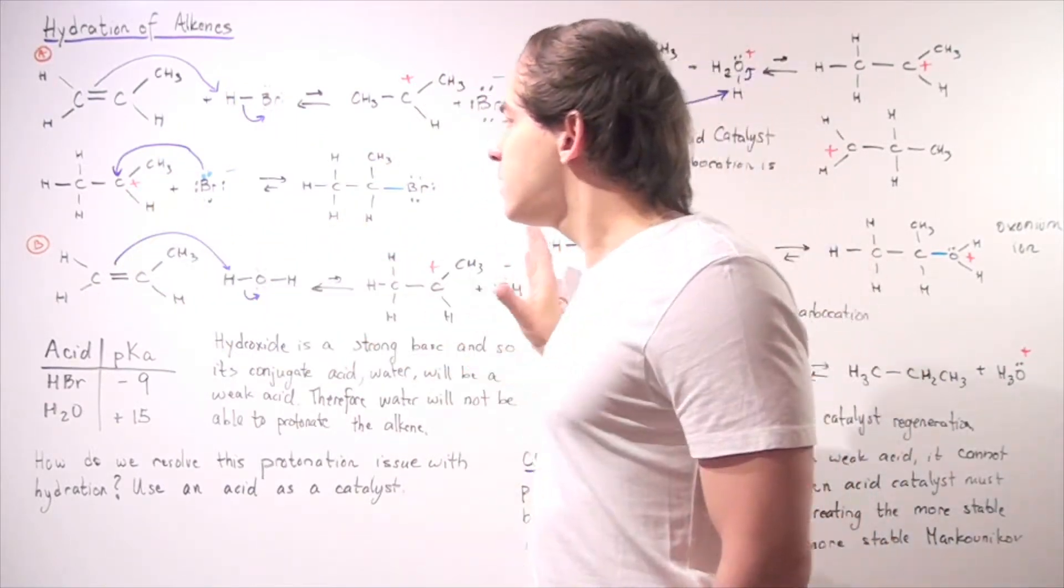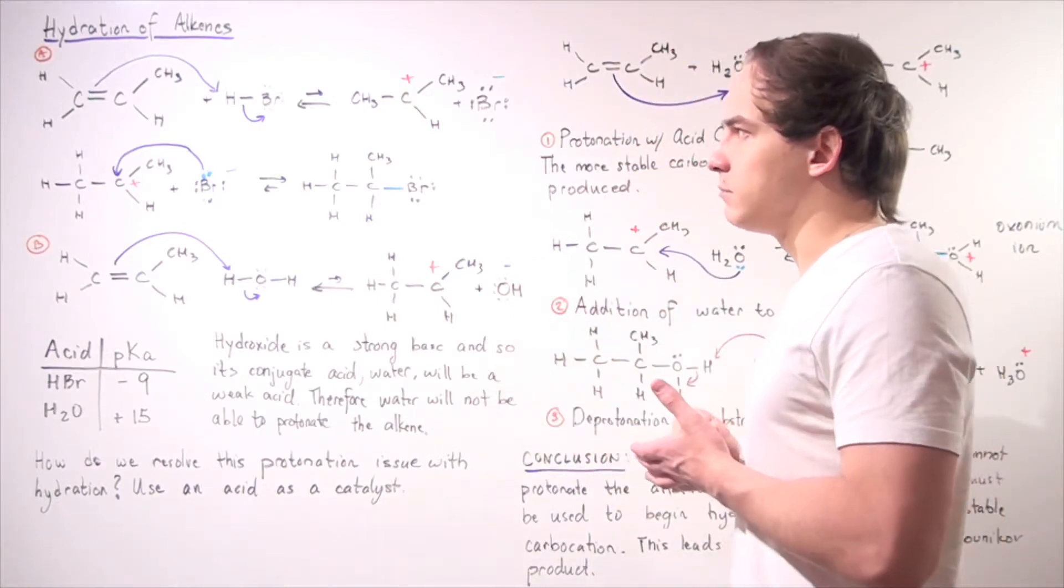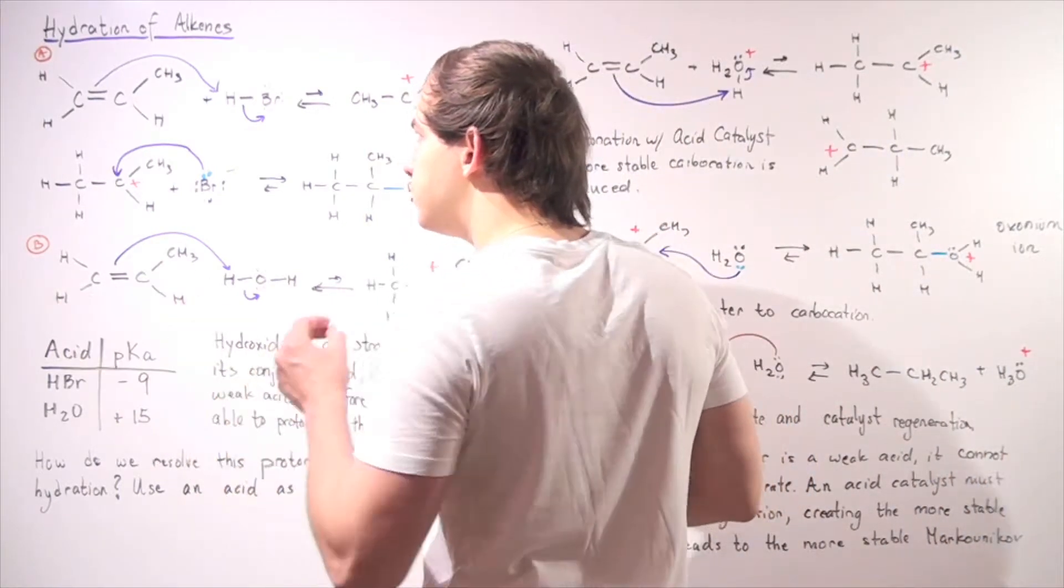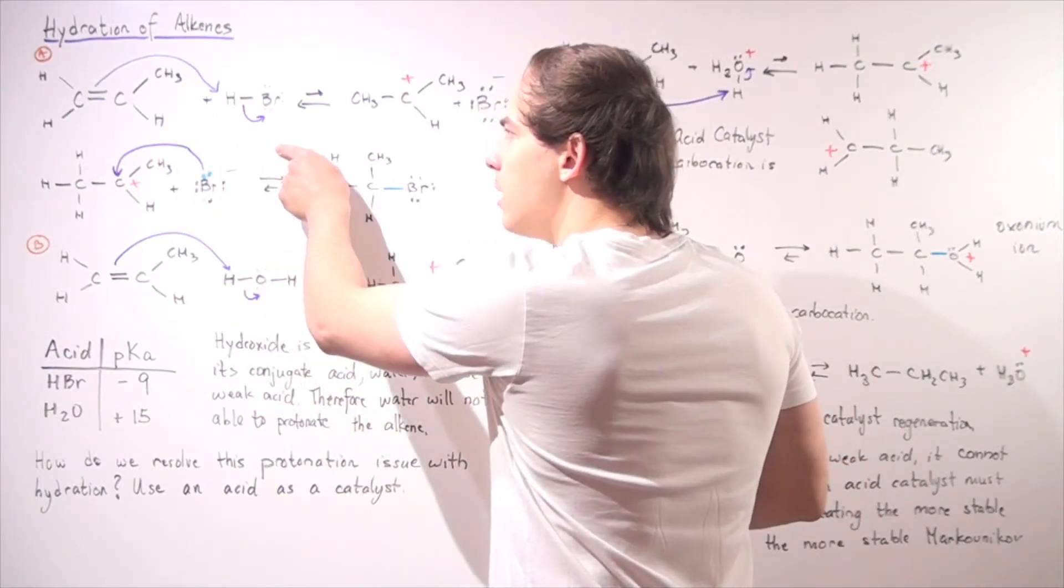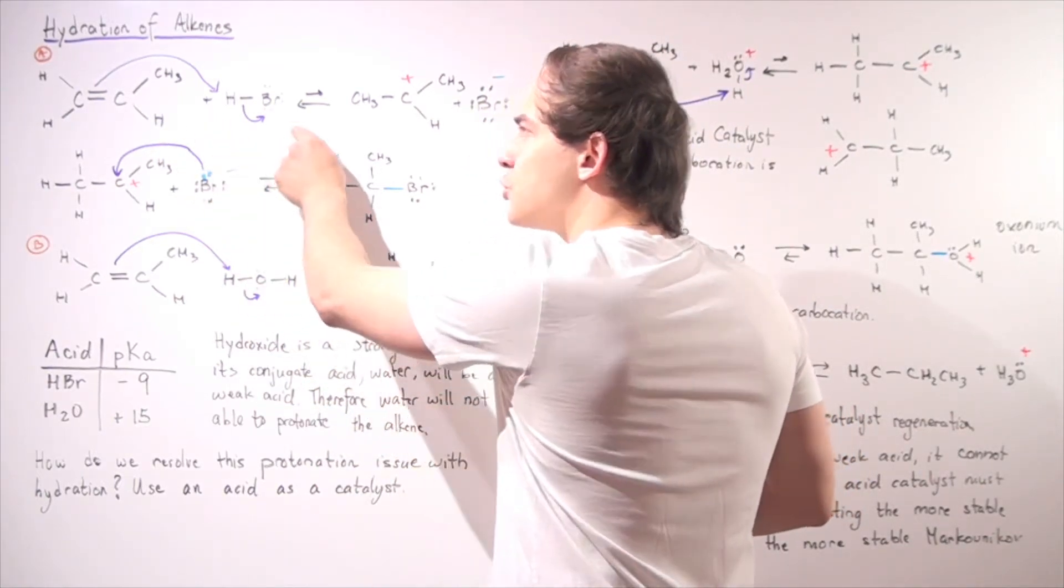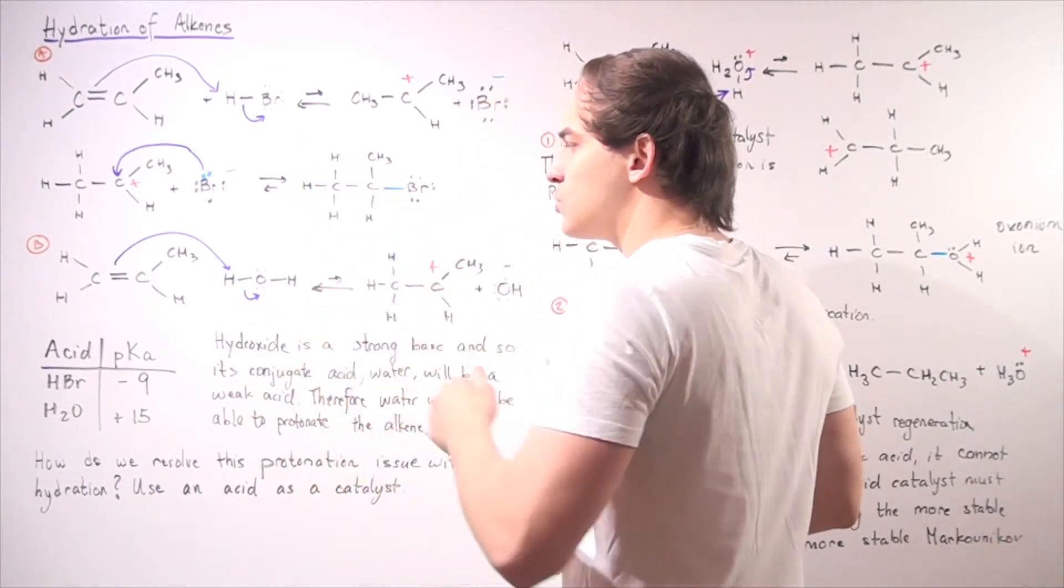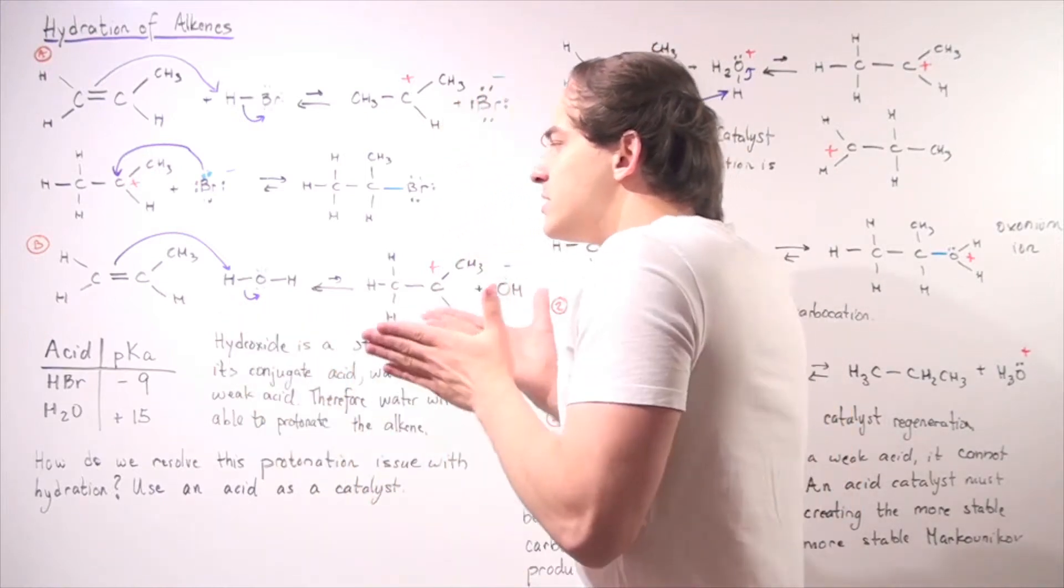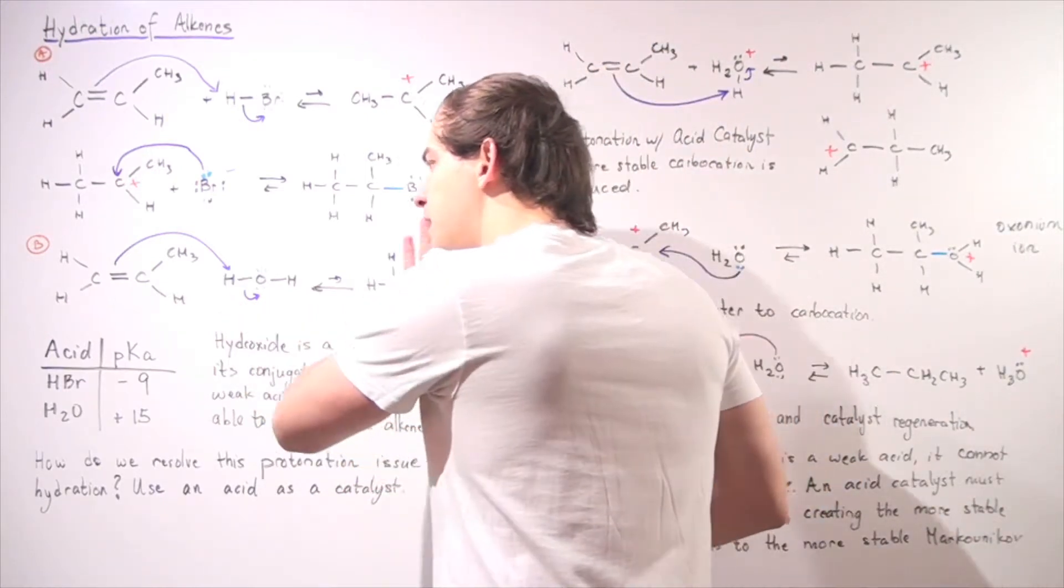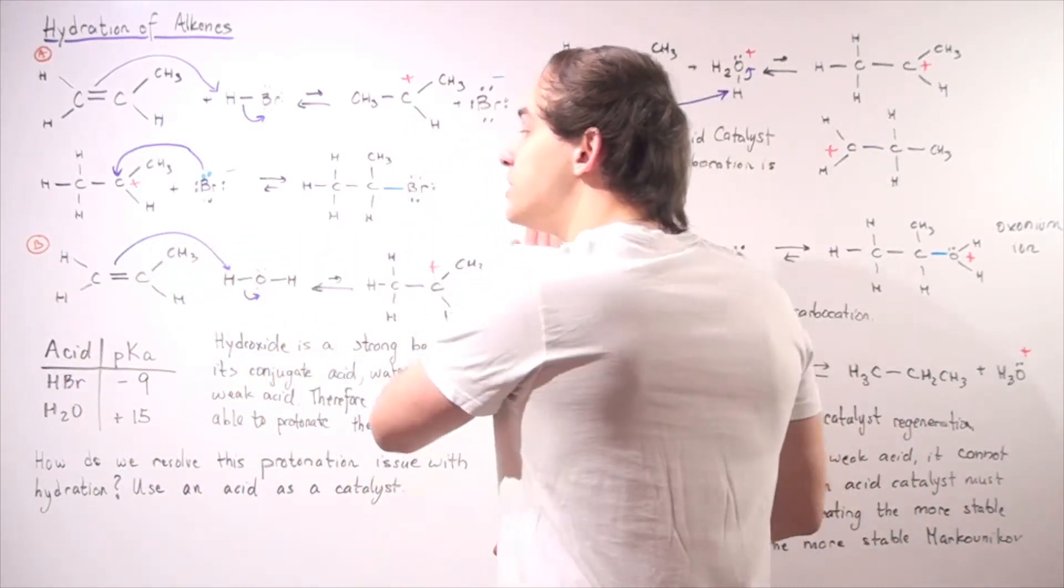Now let's look at the second type of reaction. Now we want to change things a little bit. We want to use the same alkene, but now instead of using an HBr molecule, an H attached to our halogen, we want to use a water molecule, so an H attached to our hydroxide. So we want to ask the question, will this reaction take place at a high rate or at least at a reasonable rate?